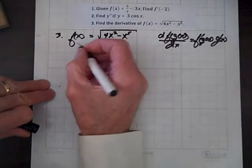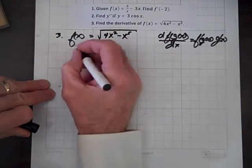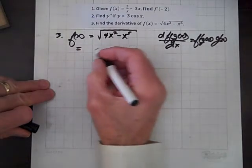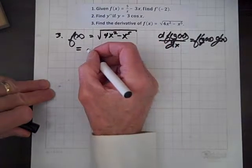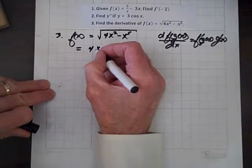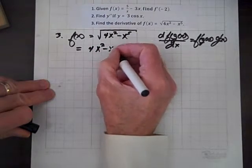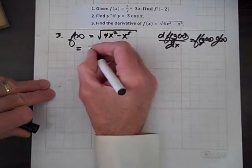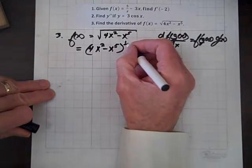So off we go. Let's deal with our friend here, and the first thing we're going to do is rewrite this in terms of a rational exponent. So that's 4x squared minus x to the fifth raised to the one-half.